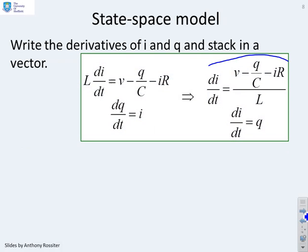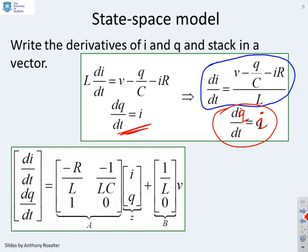So that's what I've done here. You can see that the derivative of i, di/dt, is given by voltage minus q over c minus i times R divided by L. And the derivative of q, dq/dt equals i. And so now I can put this into state space form by writing the derivatives of i and q and stacking them in a vector. So here you'll see is the stacked vector. I've got di/dt on top, dq/dt underneath. And so the top row of the right hand side gives me di/dt and the bottom row gives me dq/dt. So you'll notice I've got minus R over L times i minus 1 over LC times q equals 1 over L times V is the top row. And dq/dt equals i on the bottom row.